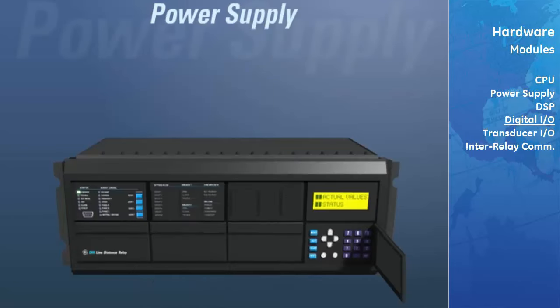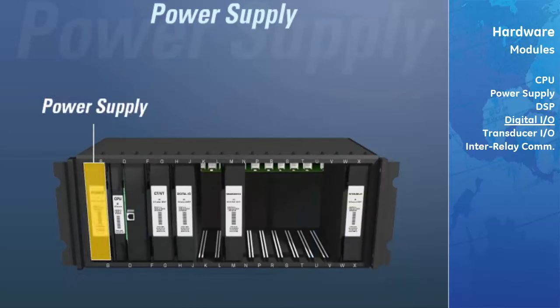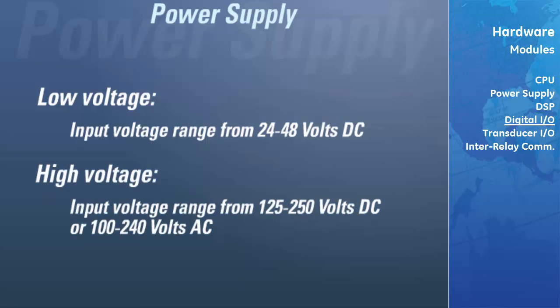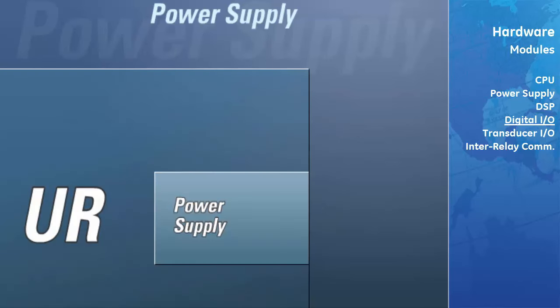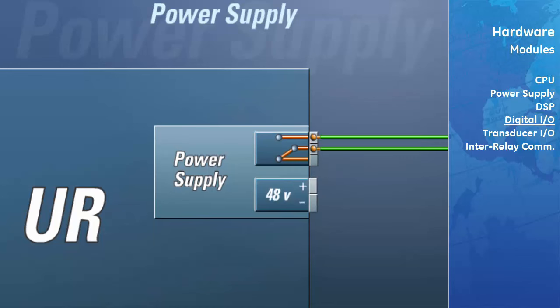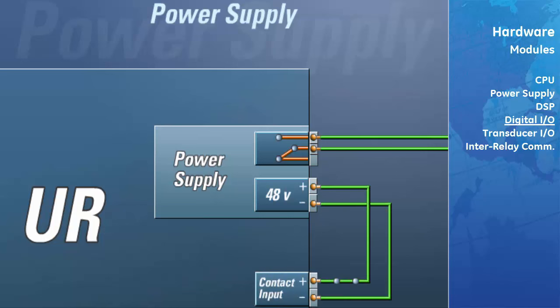The UR power supply modules supply power to the relay and are offered in both low-volt and high-volt configurations, selected to match the voltage of your station battery. The low-voltage option has an input voltage range from 24 to 48 volts DC. The high-voltage option has an input voltage range from 125 to 250 volts DC, or 100 to 240 volts AC. The power supply is equipped with a Form C critical fail relay that will signal another device if any problems are detected. A 48-volt power source is also provided on the terminal block for supplying voltage to a contact input when no external voltage is available.